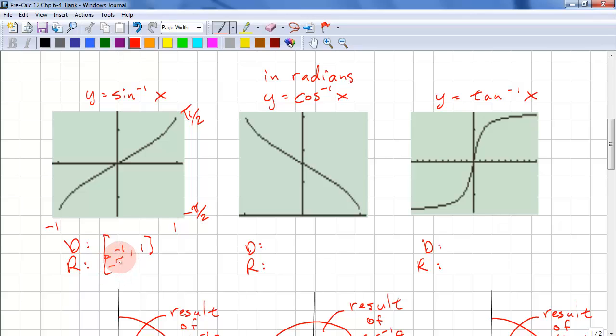And we limit that from negative pi over 2 to pi over 2. And we have to limit that because if we continue the curve, now it becomes a relation.